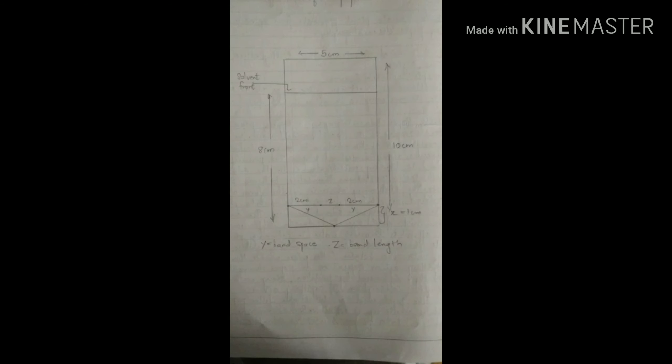Paper cutting procedure: Cut the Whatman filter paper in the dimensions of 10 cm by 5 cm. Mark the solvent front at a distance of 8 cm from one end. At the opposite end, cut the paper as mentioned in the diagram. Do not touch the paper while cutting and mark the solvent front, as fingerprints can interfere with the separation.